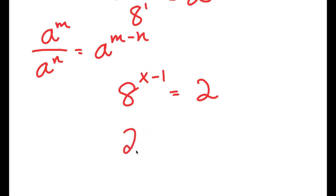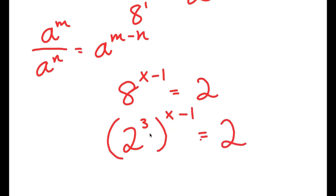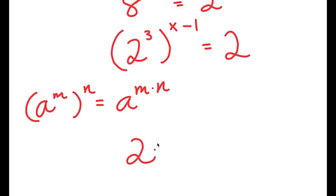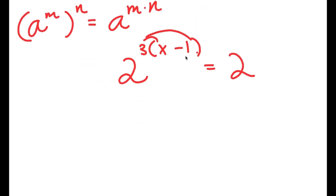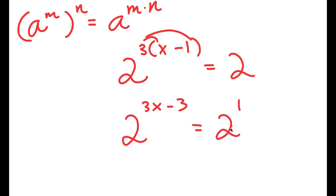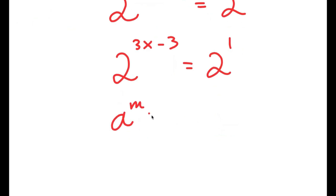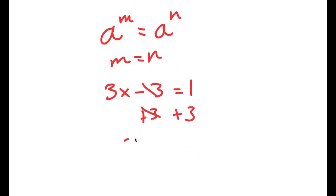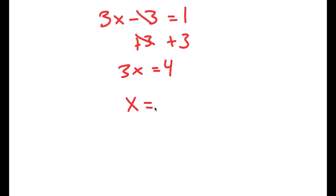Now, 8 is the same as 2 to the power of 3, so I get 2 to the power of 3, all to the power of x minus 1, equals 2. Using the rule that (a^m)^n equals a^(m times n), this becomes 2 to the power of 3 times (x minus 1). Distributing the 3 gives 2 to the power of 3x minus 3, equals 2, which is 2 to the power of 1. Since the bases are equal, 3x minus 3 equals 1. Adding 3 to both sides gives 3x equals 4, so x equals 4 over 3.